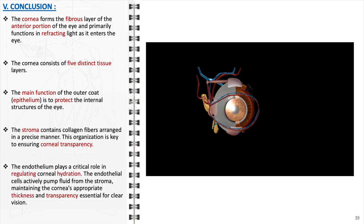The endothelium plays a critical role in regulating corneal hydration. The endothelial cells actively pump fluid from the stroma, maintaining the cornea's appropriate thickness and transparency essential for clear vision. Each of these aspects is integral to the cornea's function, contributing to its role as a major refractive element of the eye.